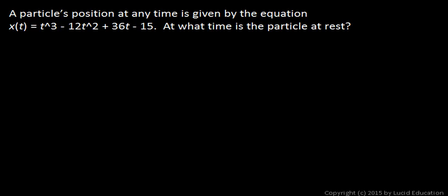A particle's position at any time is given by the equation x(t) = t³ - 12t² + 36t - 15. At what time is the particle at rest?